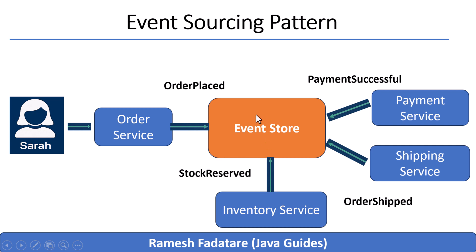These events are shared across the system. Here's how the event sourcing pattern works: Sarah places an order, and the order service saves an event called 'order placed.' It doesn't save a full order record — it saves the action that happened. This event is published to an event store, a kind of log where all events go.